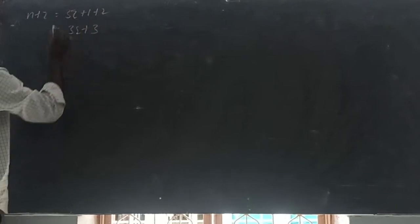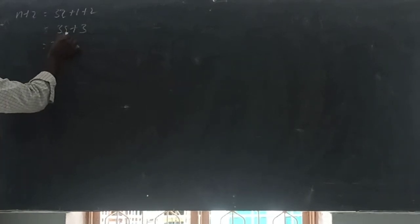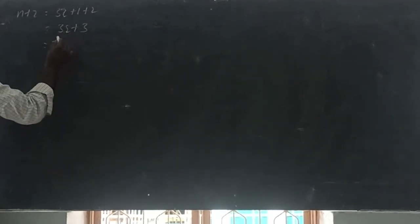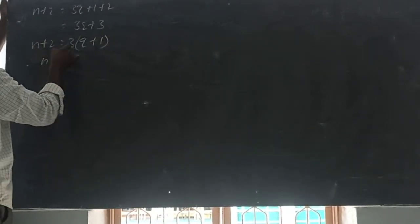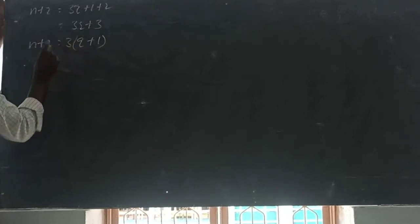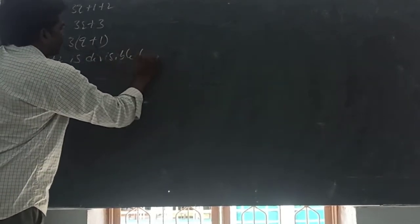N plus 2: N is 3Q plus 1, so N plus 2 is 3Q plus 1 plus 2, that is 3Q plus 3. Taking 3 outside, that is 3 into (Q plus 1). So N plus 2 is a multiple of 3. The multiple of 3 is nothing but divisible by 3. So therefore N plus 2 is divisible by 3.